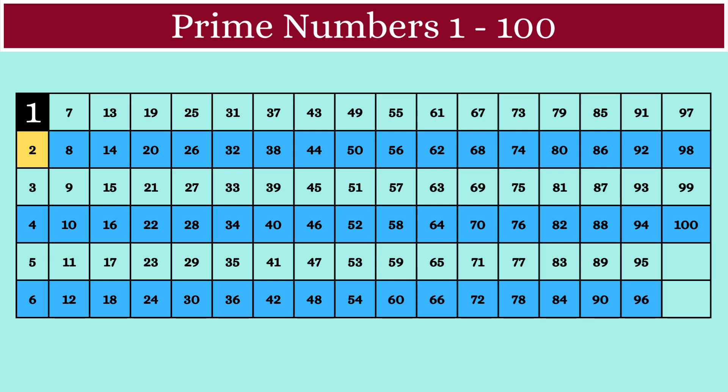Next, let's move on to 3. 3 is a prime number. It has only two factors, 1 and 3. So, we'll mark 3 as a prime number and then all the multiples of 3 will be composite.